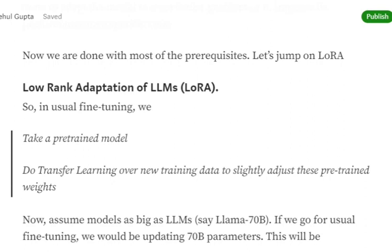In usual fine-tuning of any model, we first take a pre-trained model that is trained on a very heavy dataset, and then do transfer learning over new training data to slightly adjust the pre-trained weights.